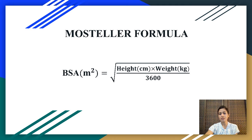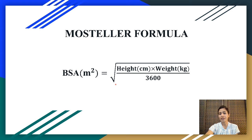Here is the formula to find out the body surface area. Even though we have many formulas, this is the one most commonly used. Body surface area equals the square root of height in centimeters multiplied by weight in kilograms, divided by 3600.